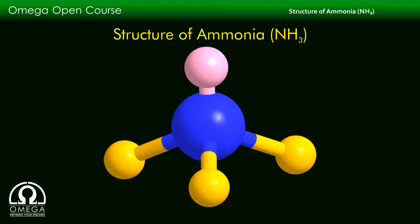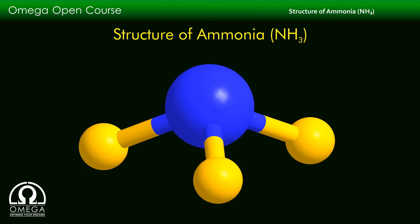This is the ball and stick model of ammonia. The nitrogen atom is attached to 3 hydrogen atoms, and there is one lone pair of electrons shown with the pink ball on the top. The shape of the ammonia molecule is pyramidal, as is clear from this model, which does not show the lone pair of electrons.